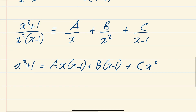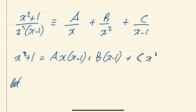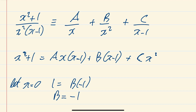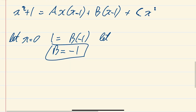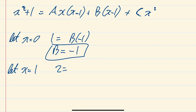Using substitution: let x=0, and the left-hand side gives 1. The A term goes to zero, the B term gives B×(−1), and the C term goes to zero, so B = −1. Now let x=1: the left-hand side is 1+1=2. The A term is zero, the B term is zero, and the C term gives C×1, so C = 2.